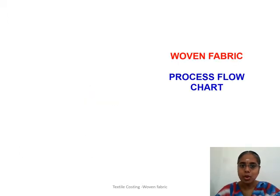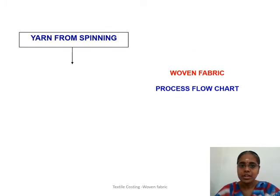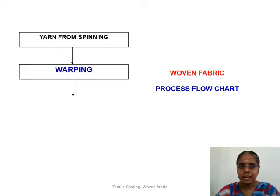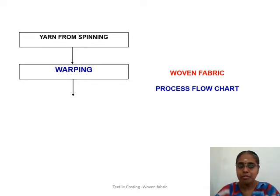Let us first look into the process flow chart for the production of a woven fabric. First, we get the yarn in the form of cones from a spinning mill. Next, after sourcing is the warping process, wherein the cones that are sourced are placed in the creels behind the warping machine, and the warping process is the conversion of the yarn from cones into a sheet form.